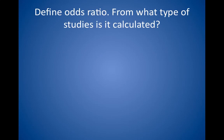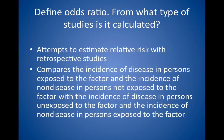Define odds ratio. From what type of studies is it calculated? Odds ratio attempts to estimate relative risk with retrospective studies, for example case-control studies. An odds ratio compares the incidence of disease in persons exposed to the factor and the incidence of non-disease in persons not exposed to the factor, with the incidence of disease in persons unexposed to the factor and the incidence of non-disease in persons exposed to the factor, to see whether there is a difference between the two. As with relative risk, values other than 1 are significant. The odds ratio is a less-than-perfect way to estimate relative risk, which can be calculated only from prospective or experimental studies.